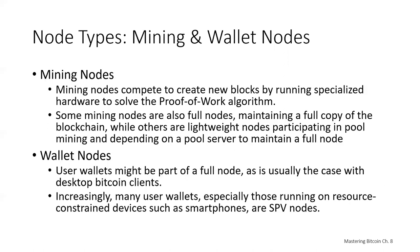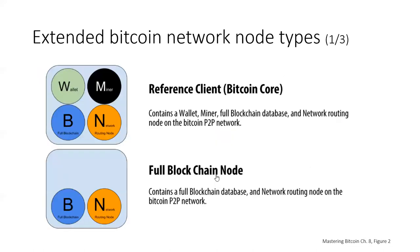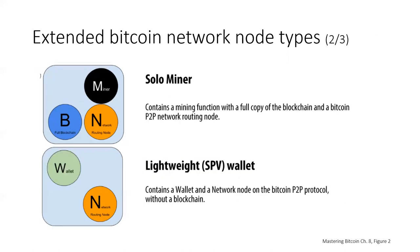Let's take a look at a diagram showing that. Here, for example, is a lightweight SPV wallet. It's got its routing capability and the wallet, but it does not have a full blockchain node.